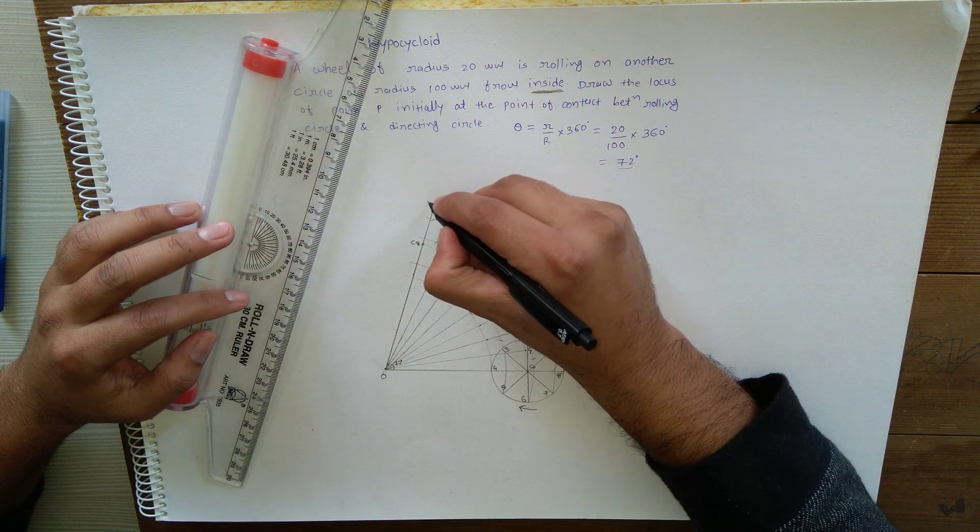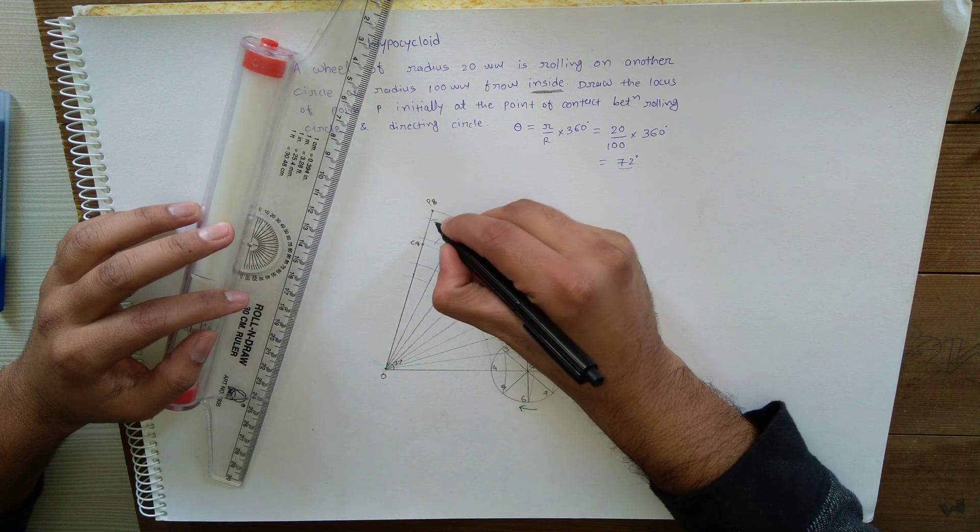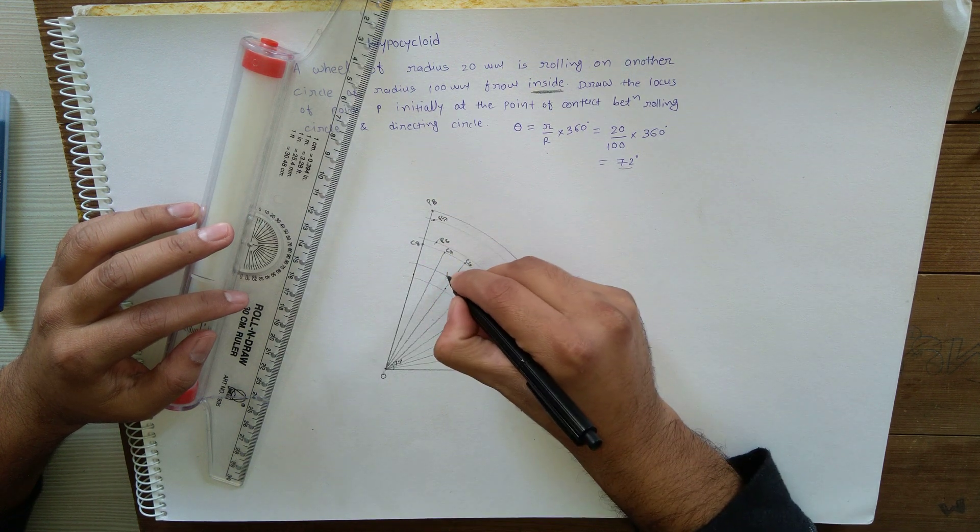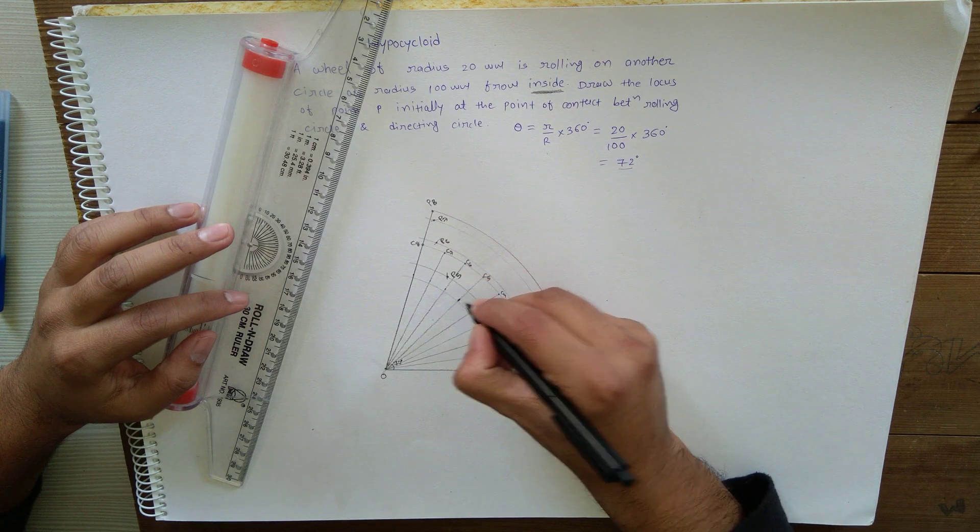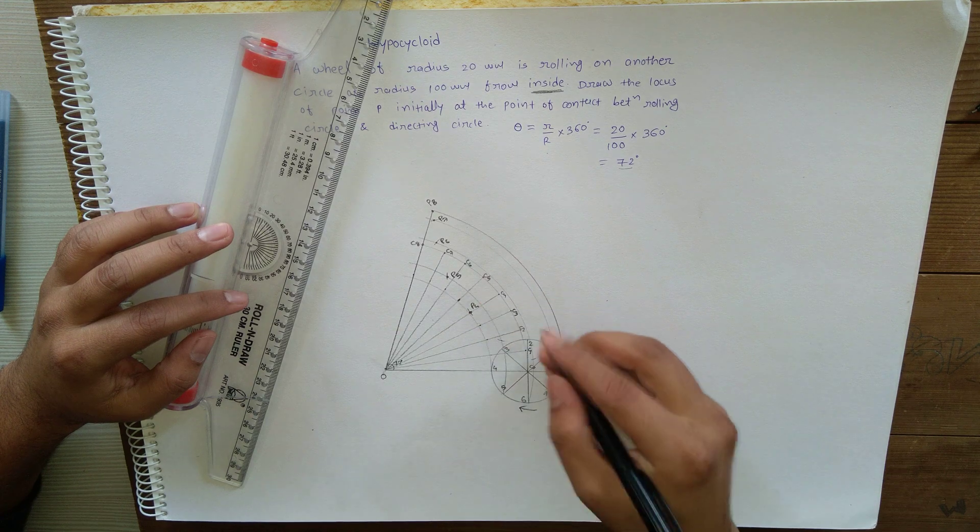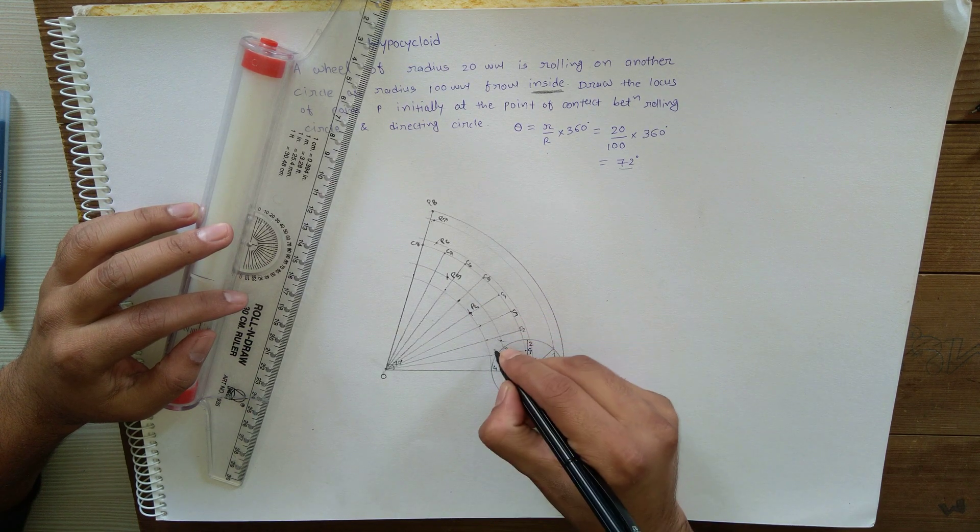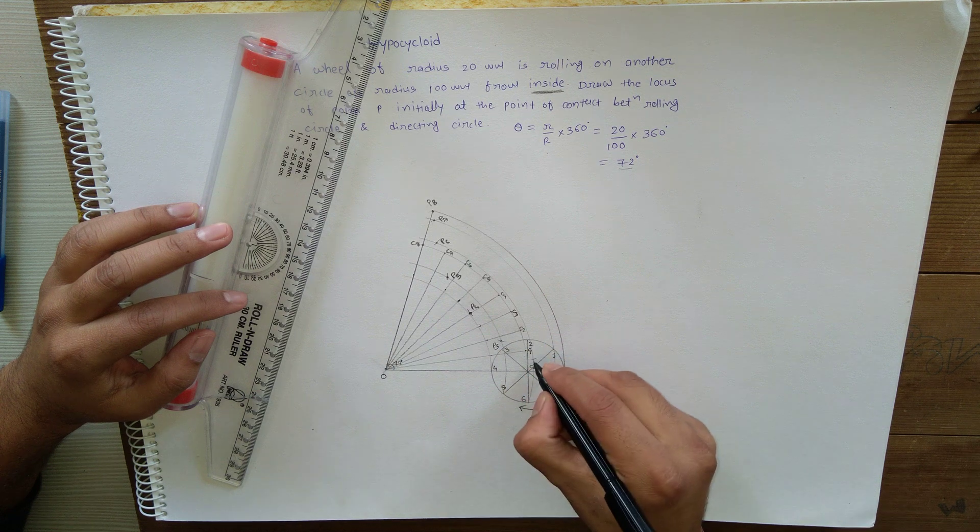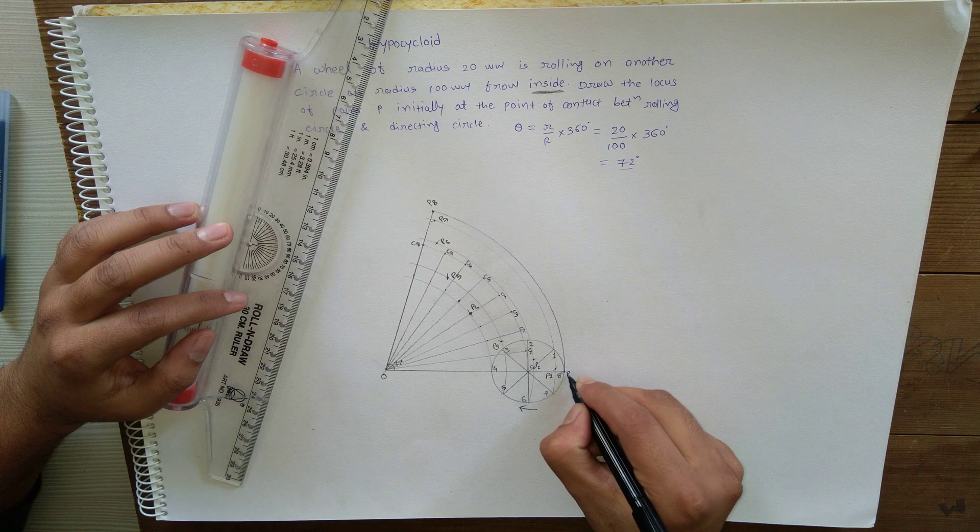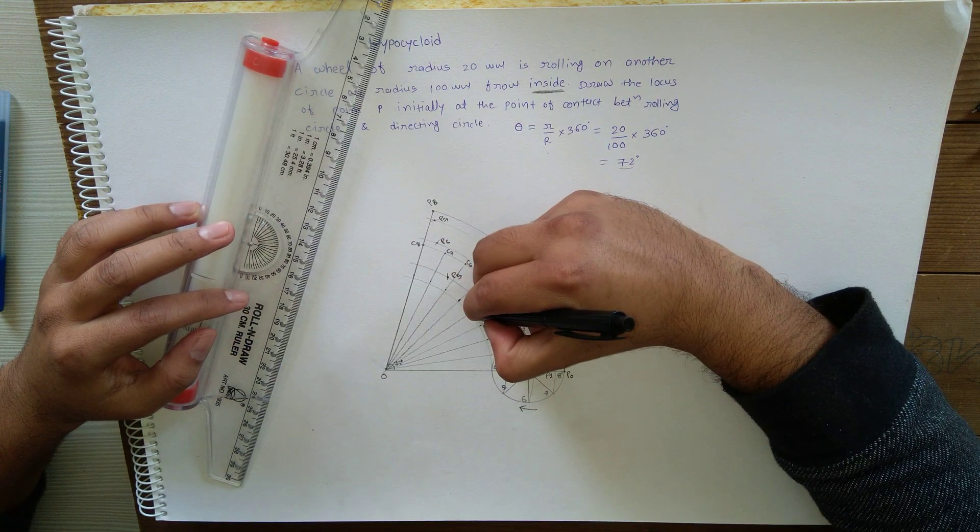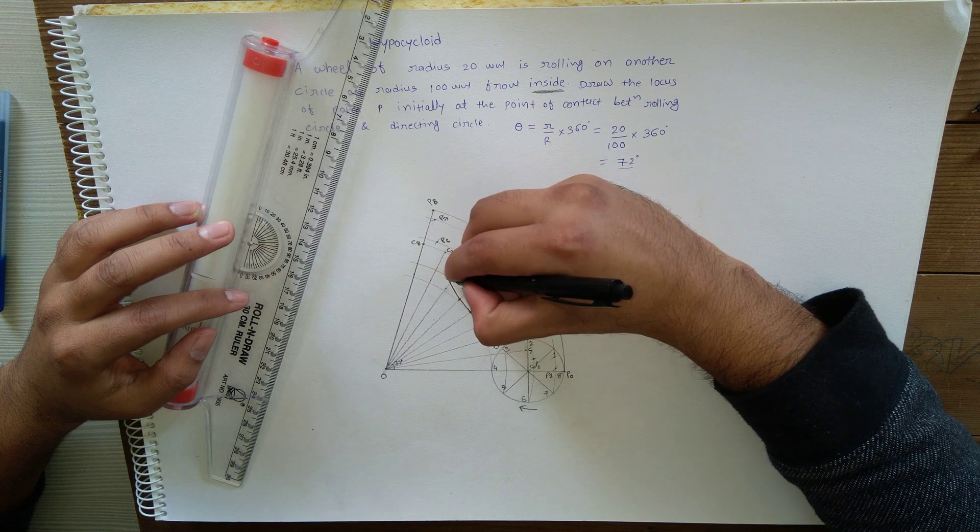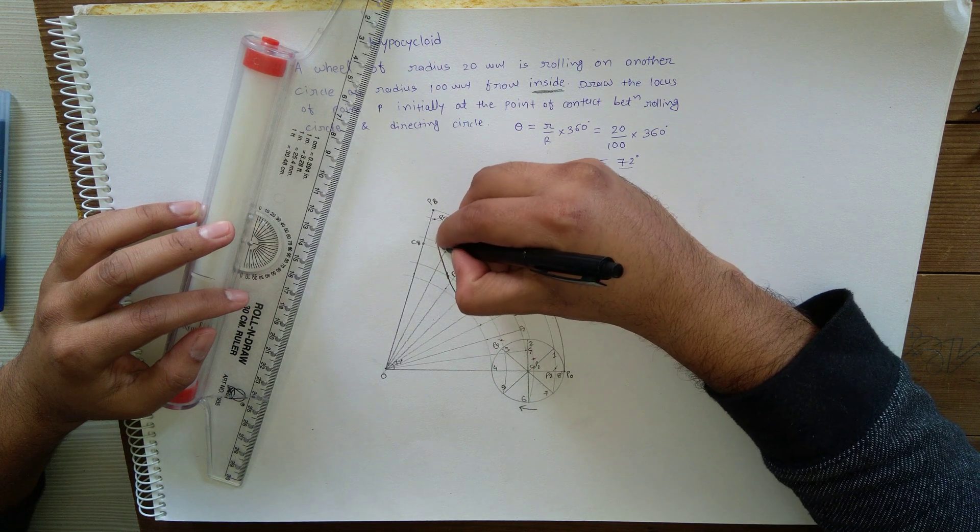So this is point P8, P7, P6, P5. Sorry, this is P4, then P3, this is P2 and P1, and this has to be P0. You can join all these points freehand and sketch the curve. This is the required hypocycloid.